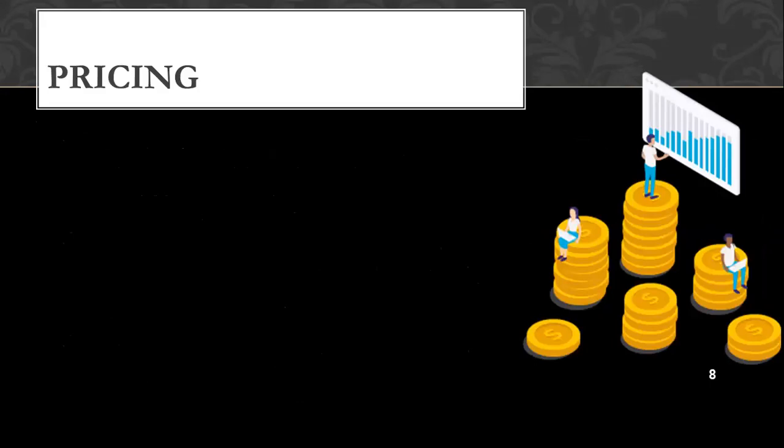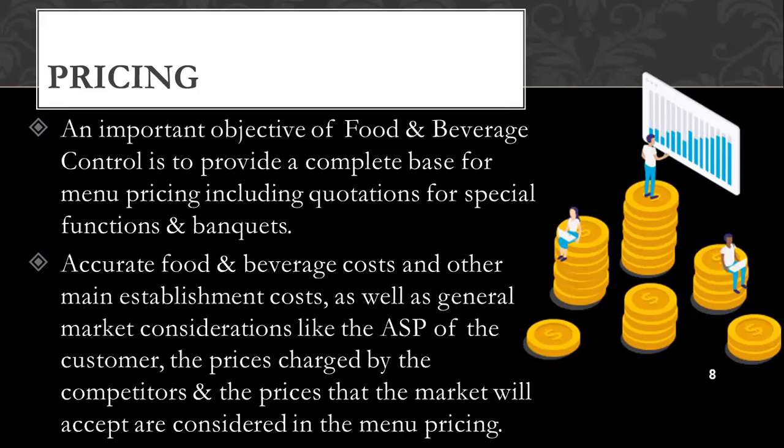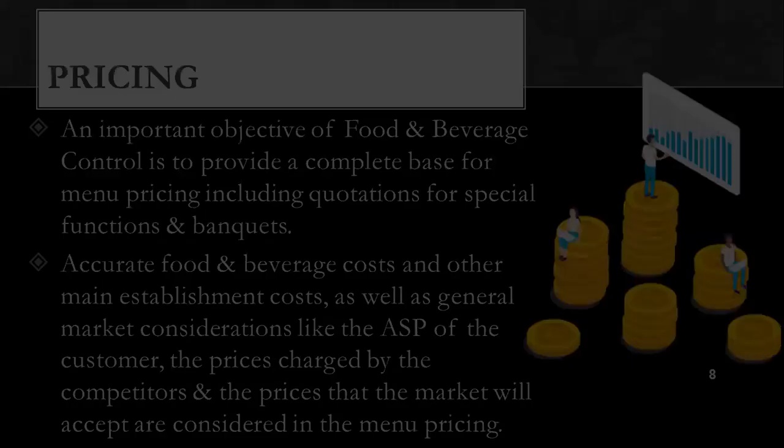The next objective is pricing. An important objective of food and beverage control is to provide a complete base for menu pricing, including quotations for special functions and banquets. Accurate food and beverage costs and other establishment costs, as well as general market considerations like average spending power of the customer, prices charged by competitors, and prices that the market will accept, are all considered when pricing a menu. There are internal and external factors which will have an impact when deciding menu pricing.